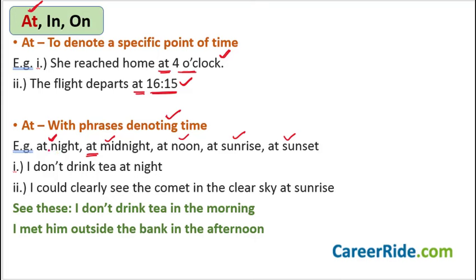Pay attention — this is extremely important. For example: 'I don't drink tea at night.' But rather than night, if it was morning, then what would happen? 'I don't drink tea in the morning' — I'm not saying 'at the morning' or 'at morning,' I'm saying 'in the morning.' Because with words like morning, evening, afternoon you use 'in.' Similarly, 'I met him outside the bank in the afternoon' — I'm not talking about any specific time like 4 o'clock or 5 o'clock.